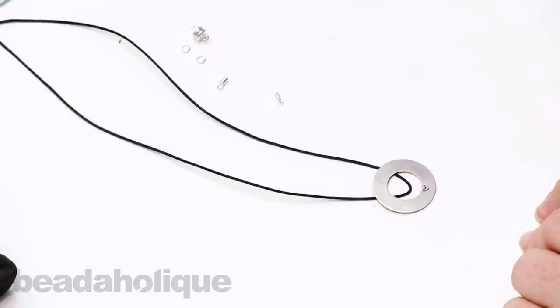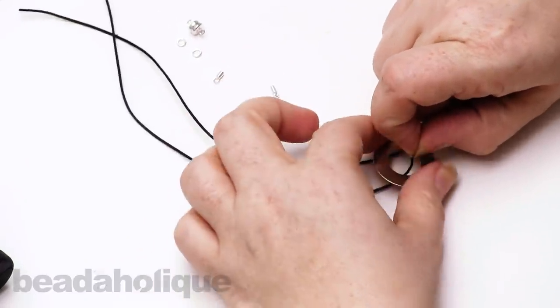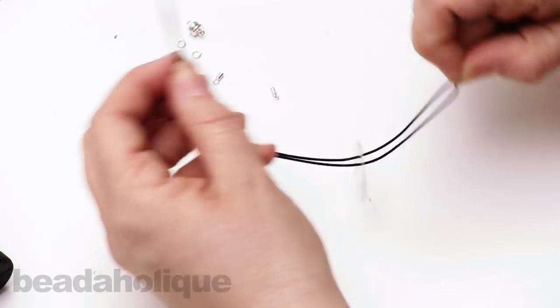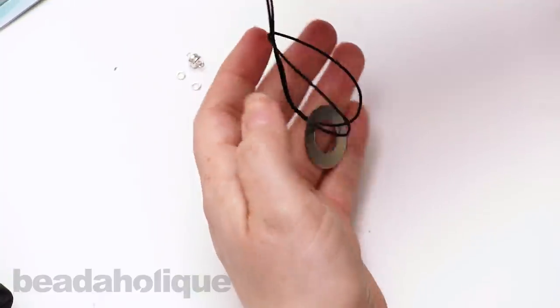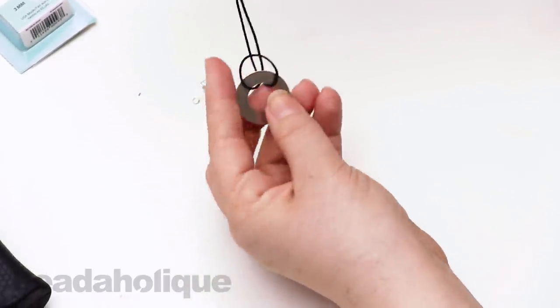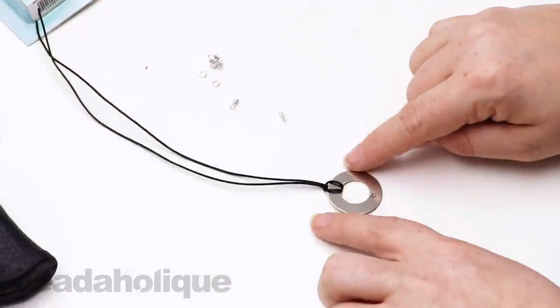So what the little loop just like so. And now pull that loop through. Pull your two ends through. And now you're just going to pull down. And you're going to get that little lark's head knot. So this is one way to do it.